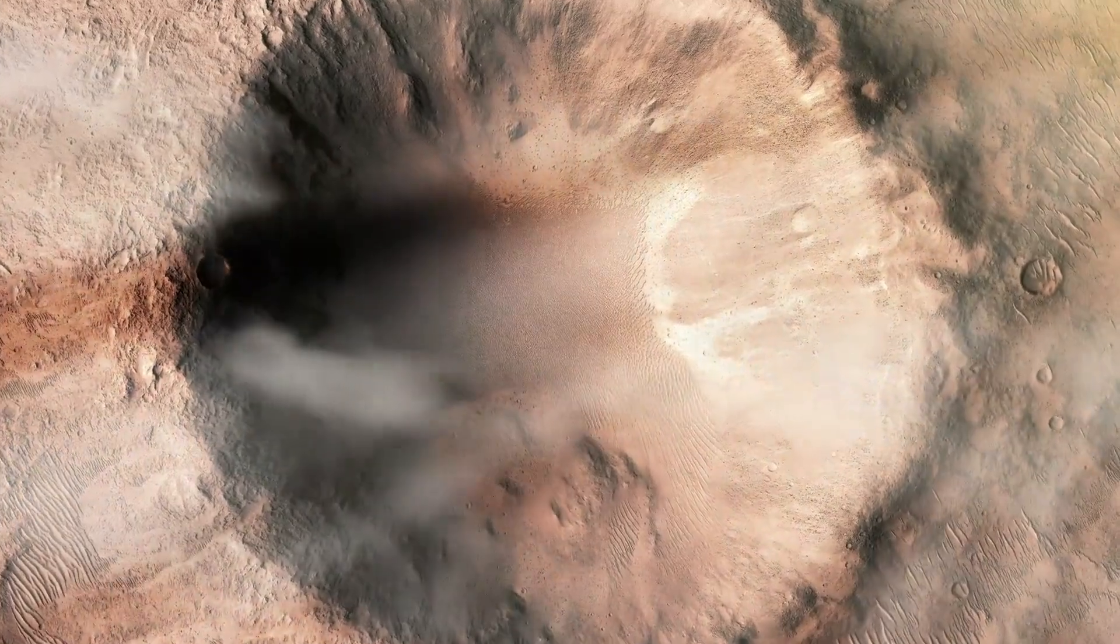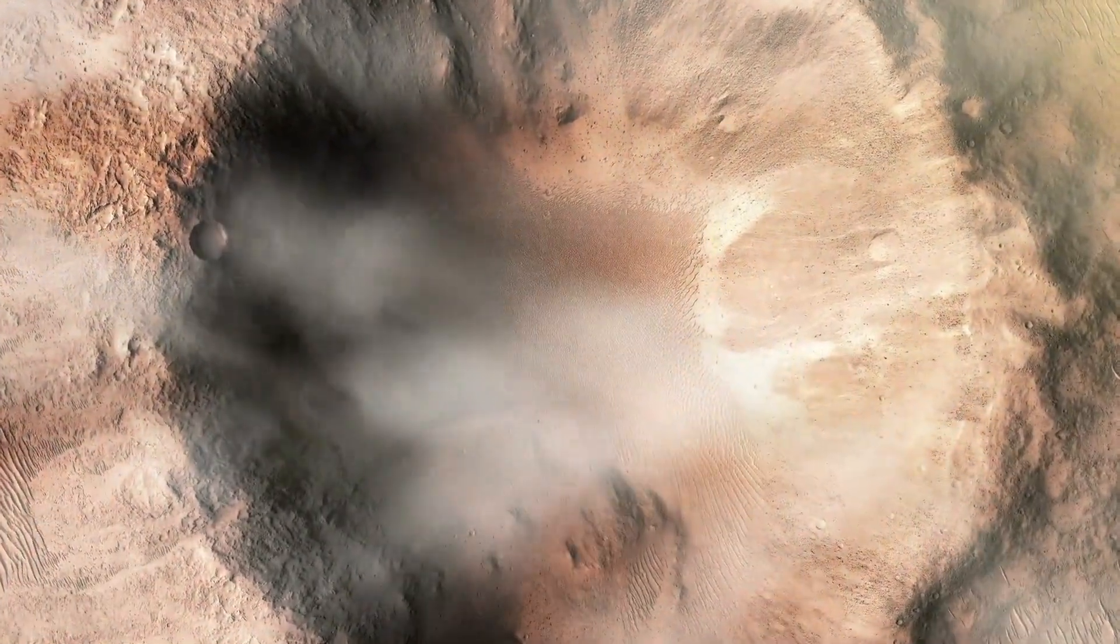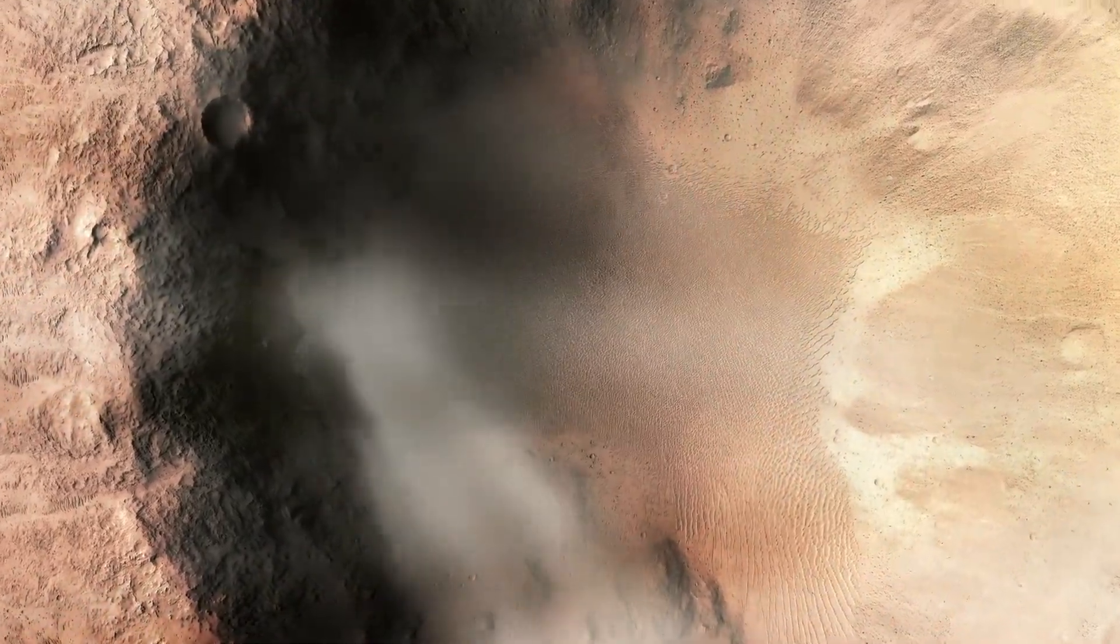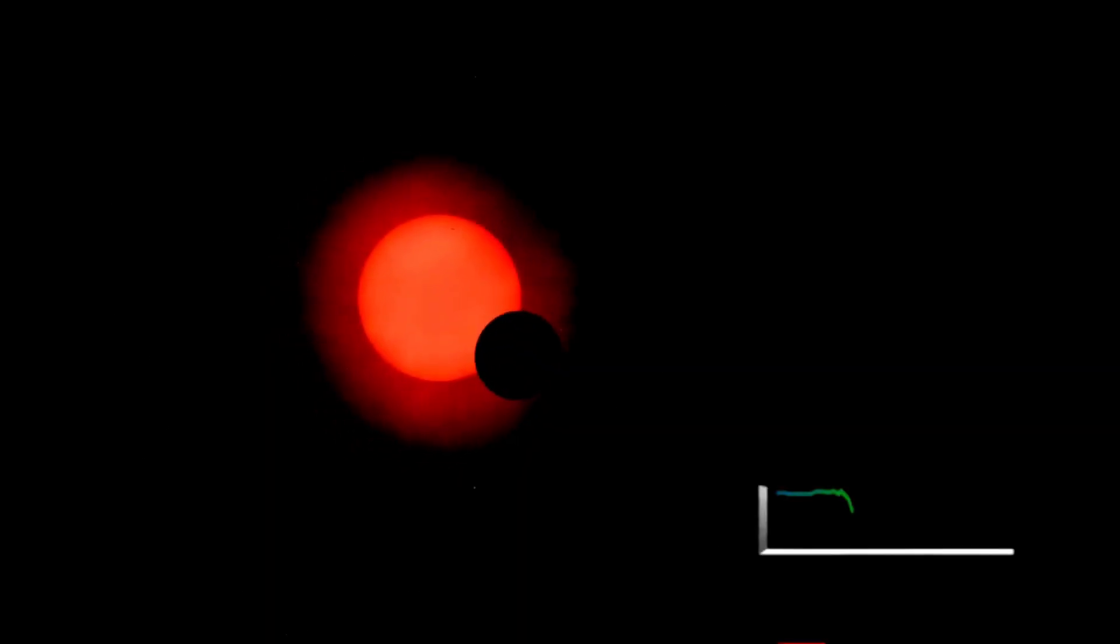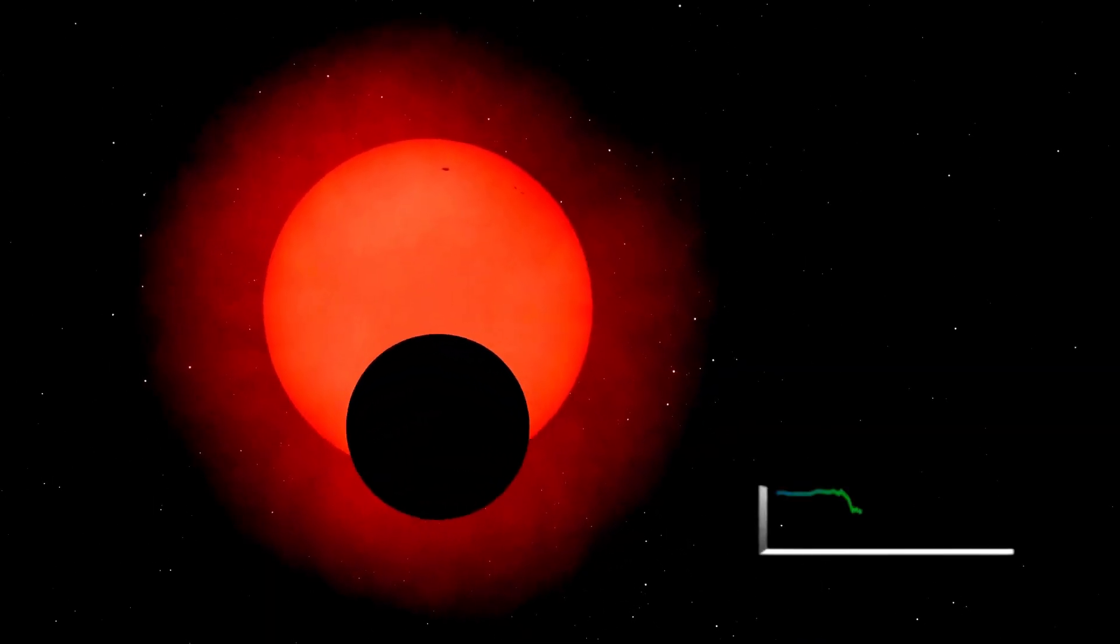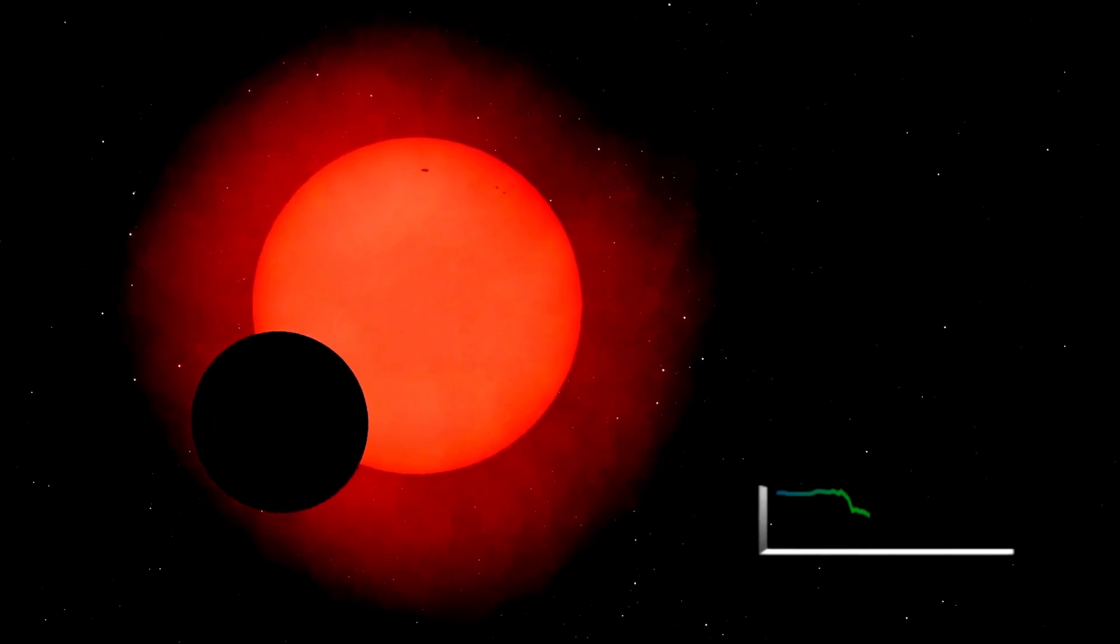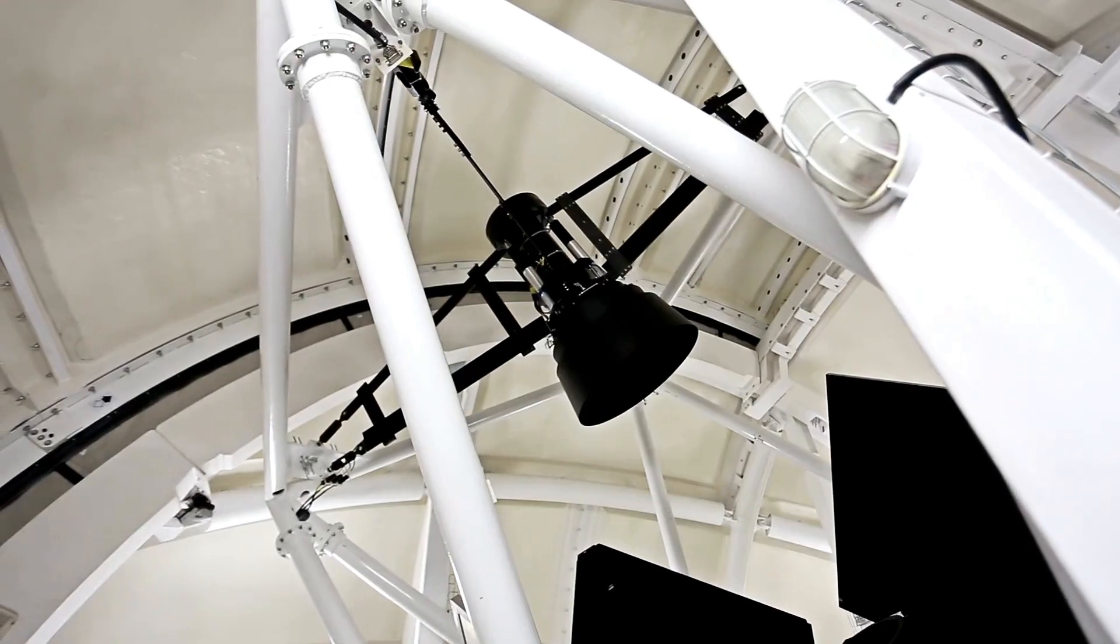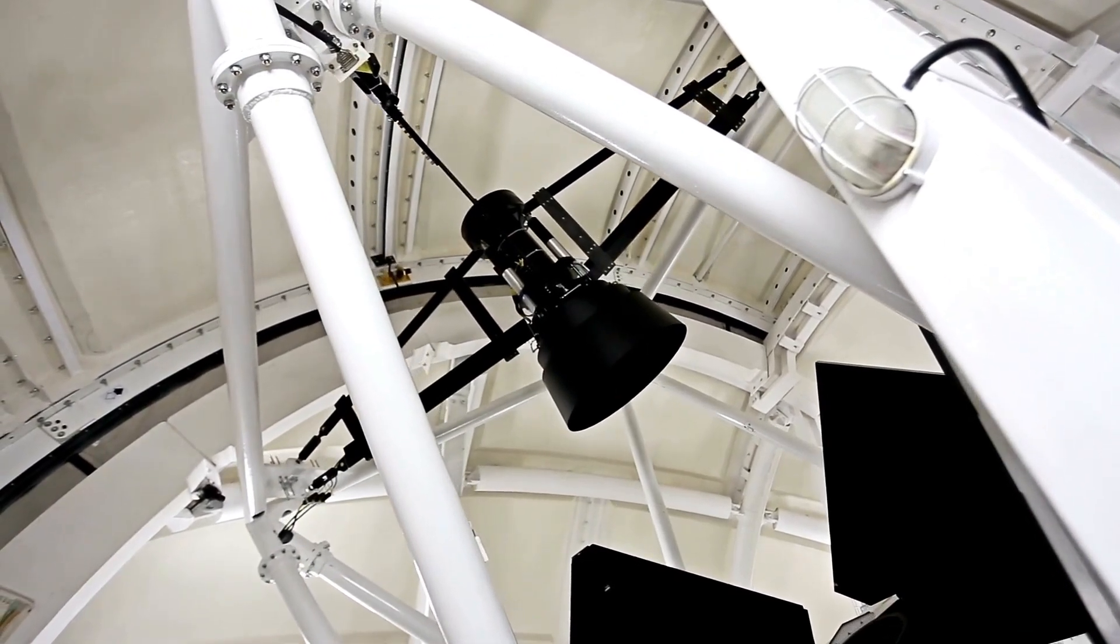Regarding the possibility of a Betelgeuse supernova, astronomers speculate that it could occur at any time within the next 10,000 to 100,000 years. Based on factors such as the star's color, brightness, size, and estimated age, scientists suggest that Betelgeuse is currently in the early stages of helium-to-carbon fusion. This process must continue through oxygen, silicon, and finally iron, before the star's core collapses under its own gravitational pull, leading to a cataclysmic explosion.